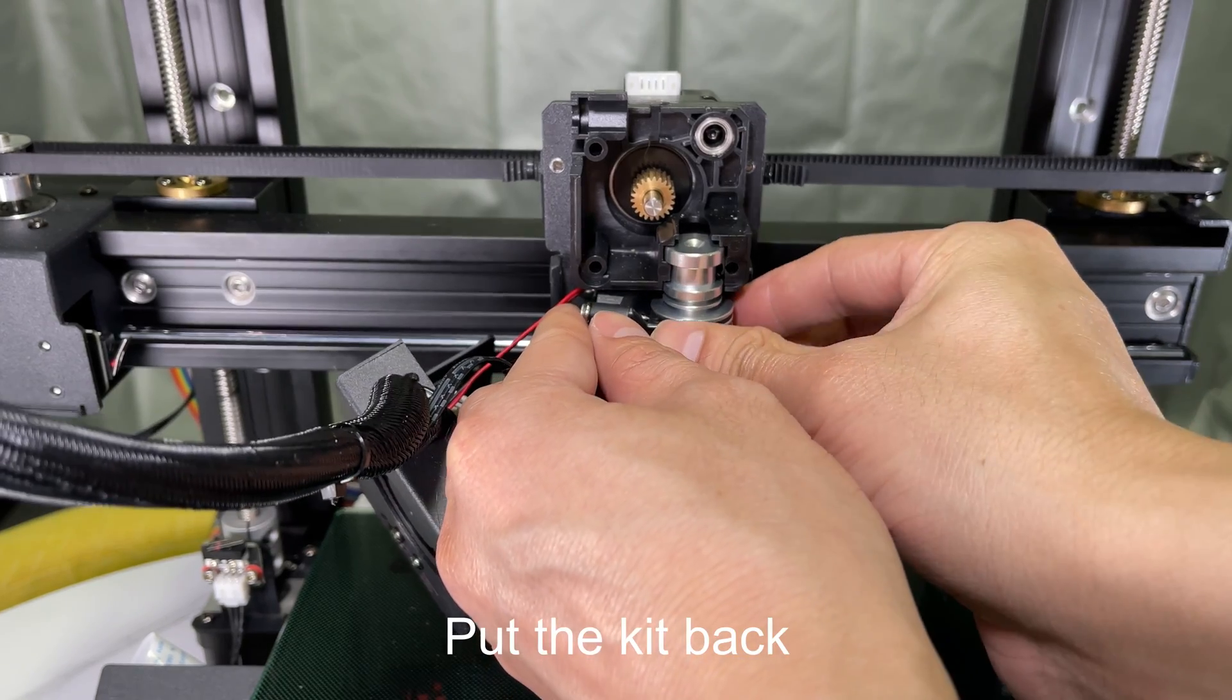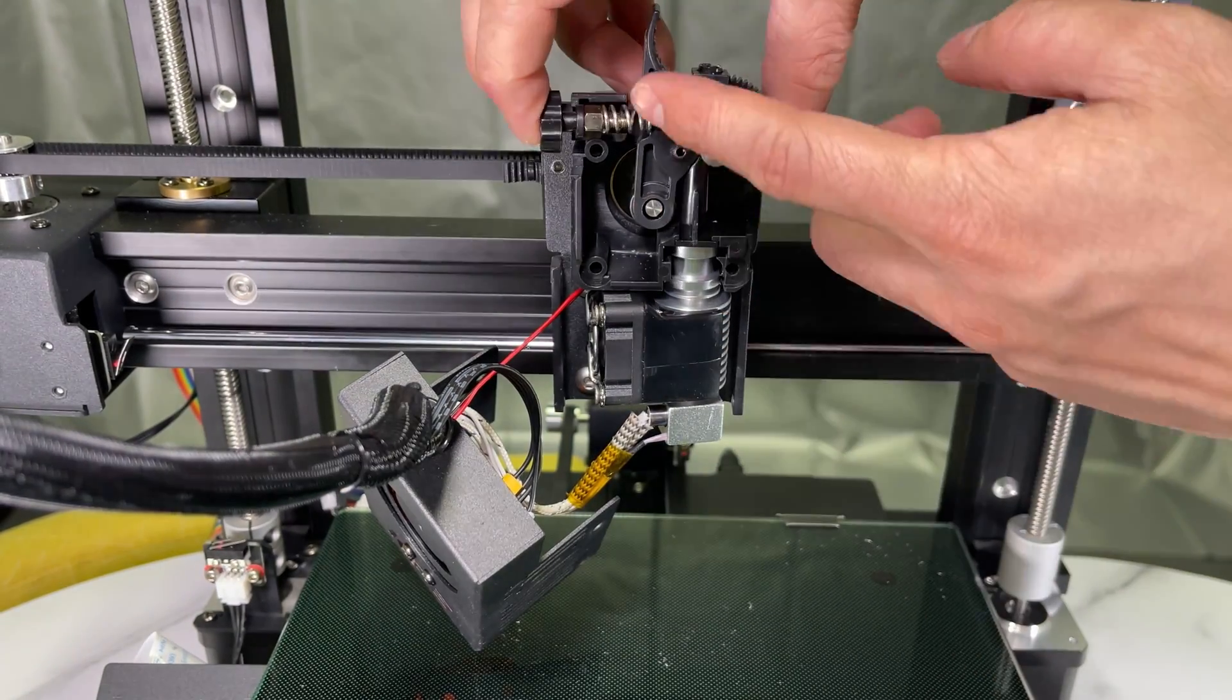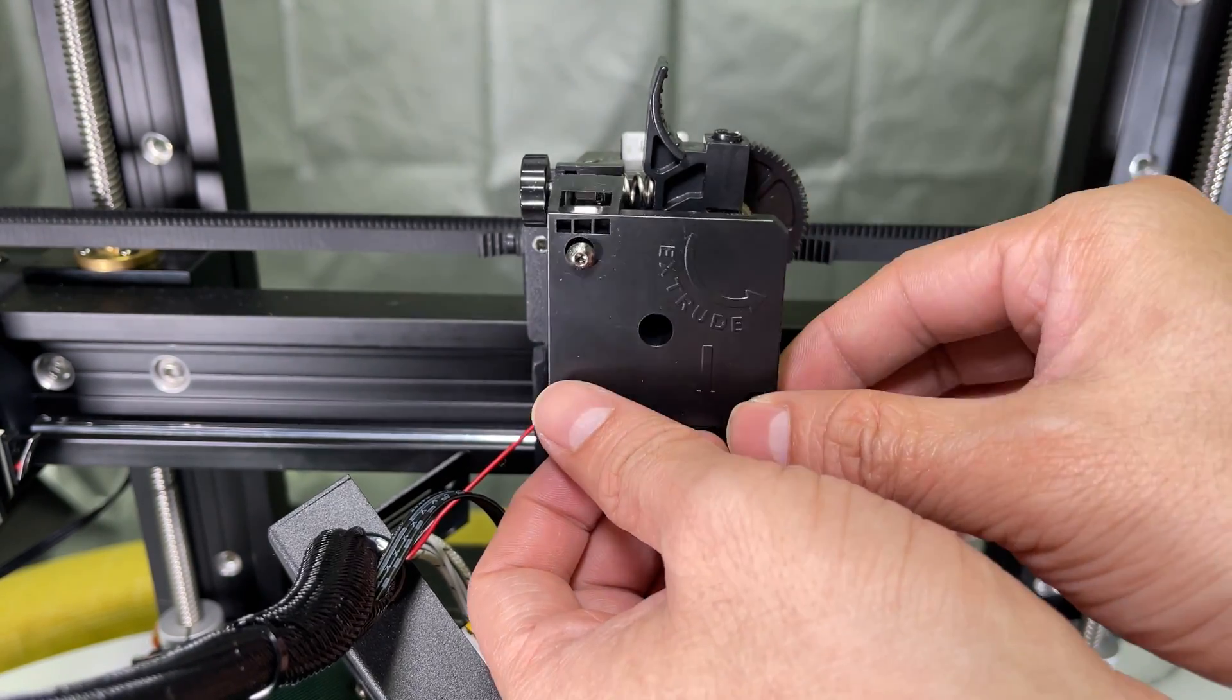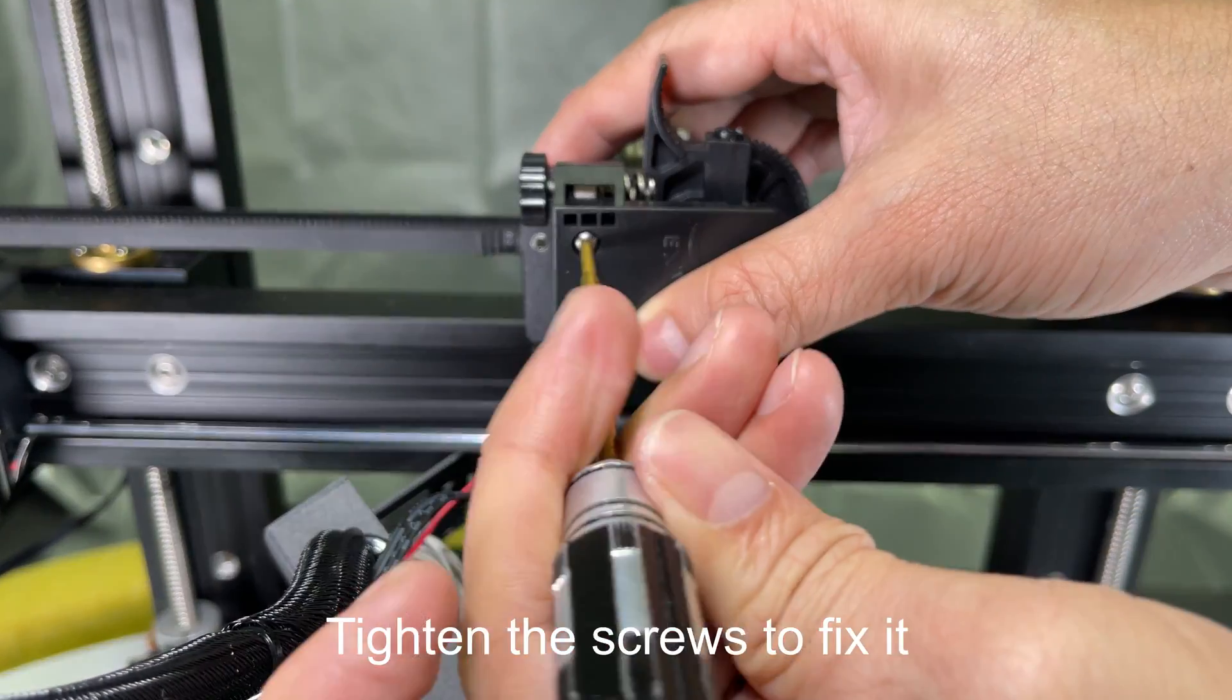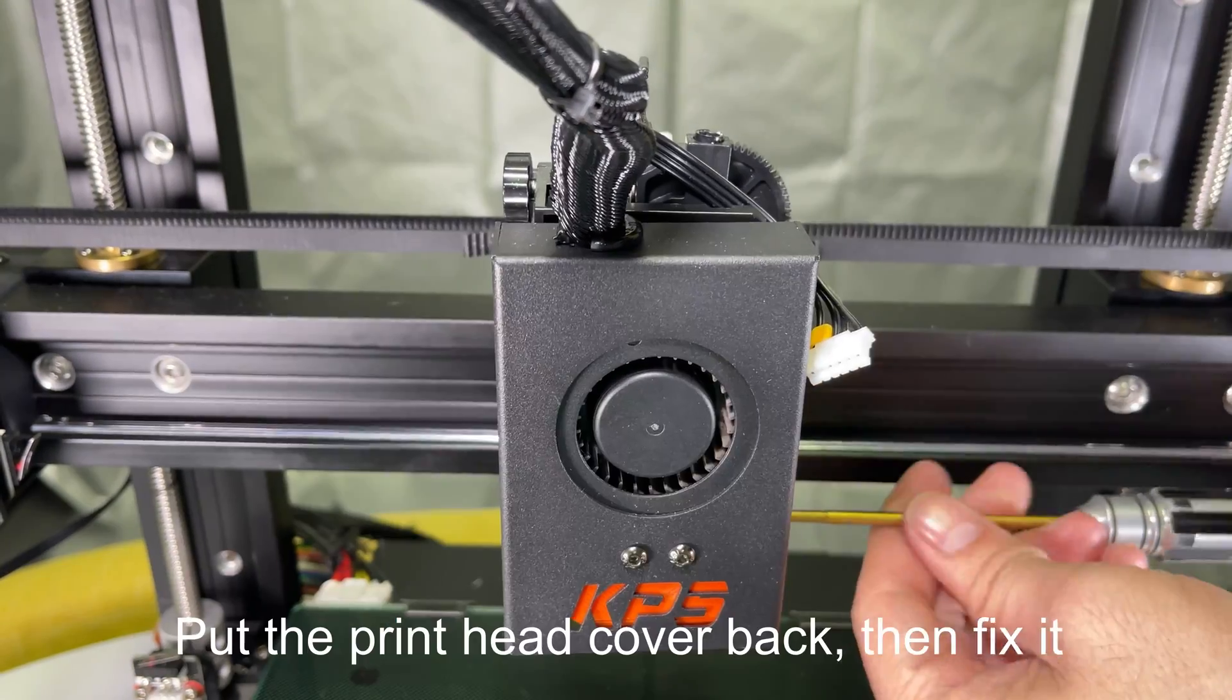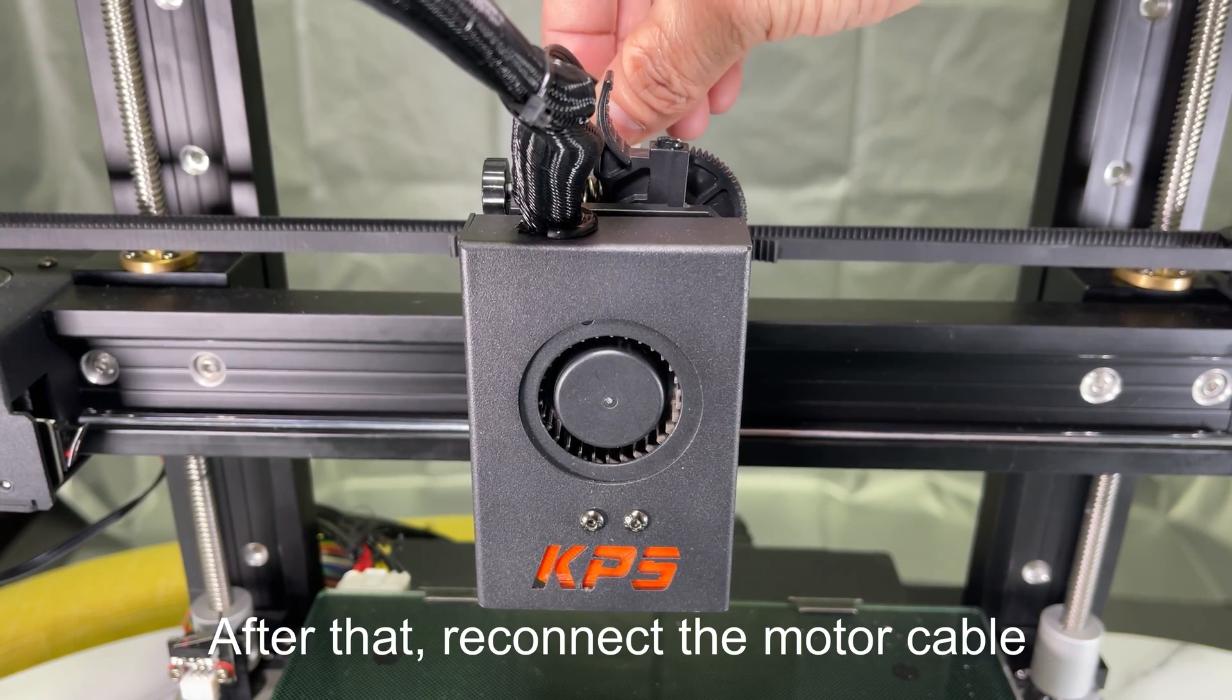Put the kit back. Then put all the parts back. Then the top cover. Tighten the screws to fix it. Put the printhead cover back. Then fix it. After that, reconnect the motor cable.